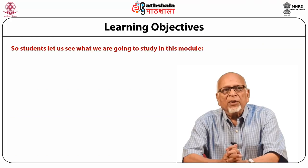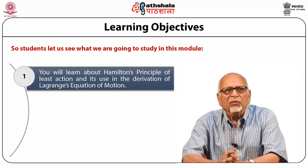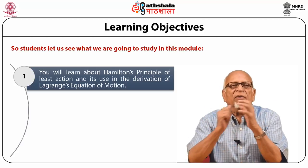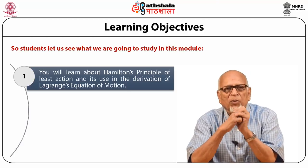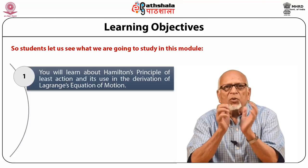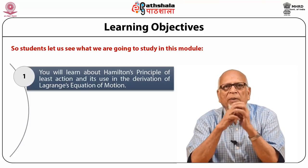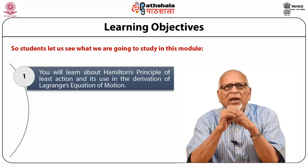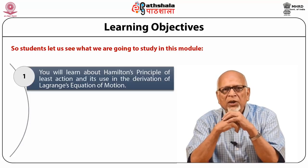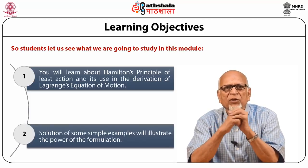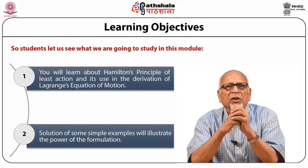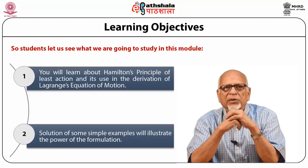First, remember that we have obtained the Lagrangian's equation from D'Alembert's principle. So in this module we will re-derive the Lagrangian's equation from a more powerful principle which is Hamilton's principle. After completing this module, you should be able to learn about Hamilton's principle of least action and its use in the derivation of Lagrangian's equation of motion. We will then illustrate the power of this formulation by solving a few simple examples.